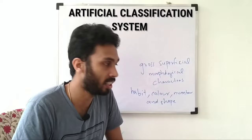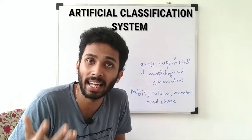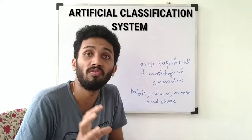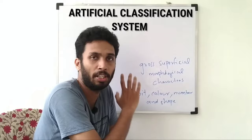These are vegetative characteristics. We also consider reproductive characters. So in the Artificial System of Classification, we use vegetative characters — such as leaves — as well as gross superficial morphological characters.